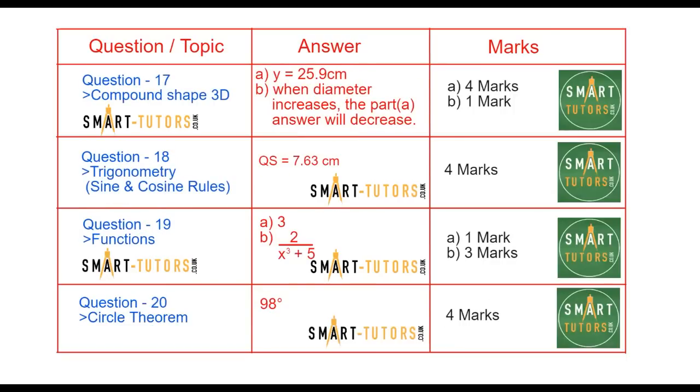Question number seventeen is a compound shape with a hemisphere and a cone combined together. There's a four mark question to find out the Y length, and a one mark question predicting what will happen if the diameter increases for the part A answer. Question number eighteen is trigonometry, use of sine and cosine rule. Question number nineteen is functions, the inverse function combined with the composite function.